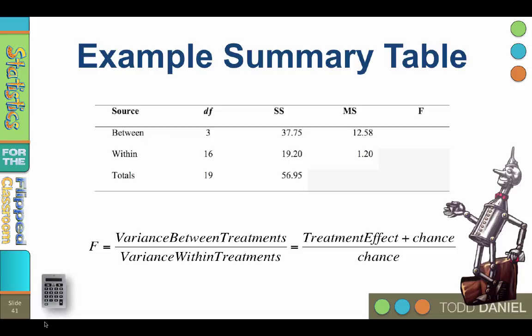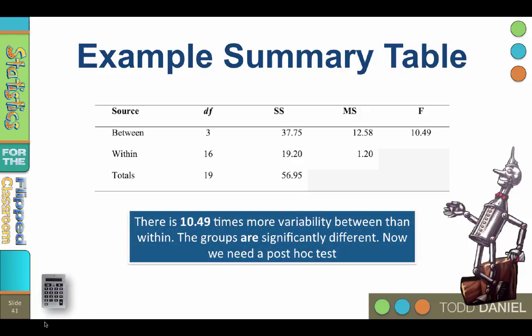The variance in Wicked Witch Complaints between regions is a function of the region, which we will call a treatment effect, plus random chance. And the variability within each region is just due to random chance. By dividing the two variances, we are canceling out the chance term, leaving us just with the treatment effect. How much more of the variability in complaints was due to living in a certain region? The f-ratio is the mean square between divided by the mean square within. In this case, 12.58 divided by 1.20 is 10.49.